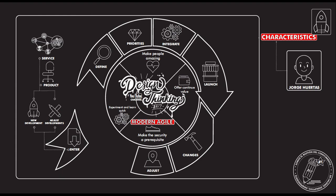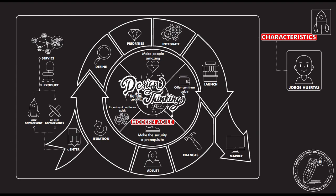You have to be very specific and define all the different components. The iteration is something very important because it allows you to create and better understand the different components. After that, you release to the market. There is not a specific order — you could start with defining priorities, then integrate, launch, make changes, adjust, and do a new iteration before the final launch.